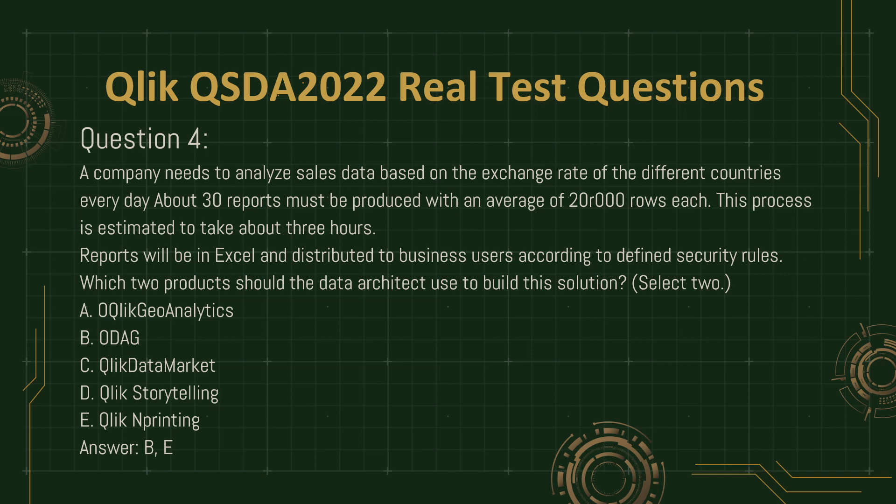Question 4. A company needs to analyze sales data based on the exchange rate of different countries every day. About 30 reports must be produced with an average of 20,000 rows each. This process is estimated to take about 3 hours. Reports will be in Excel and distributed to business users according to defined security rules. Which two products should the data architect use to build this solution?